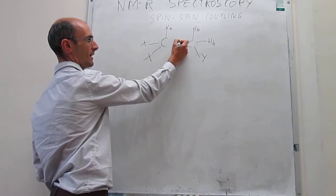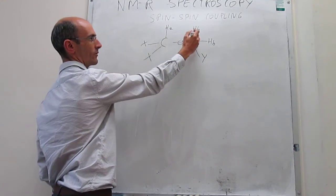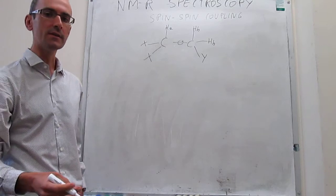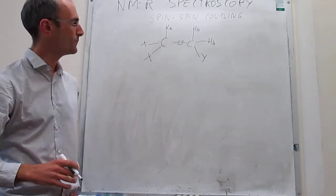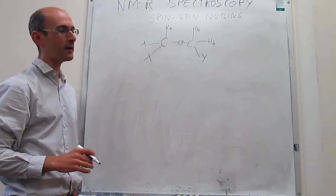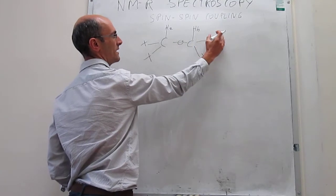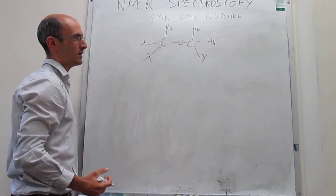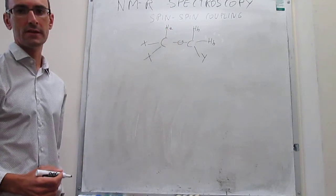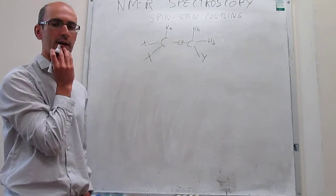Notice that we're always assuming that we have free rotation around single bonds. That means that the electronic environments at H_B are exactly identical, and that means that they will originate just one signal. We have seen in a prior video the splitting patterns from a situation in which we had one atom of H_A and one atom of H_B. In this case, we change that to one atom of H_A and two atoms of H_B, and try to analyze the splitting patterns that emerge from those couplings.